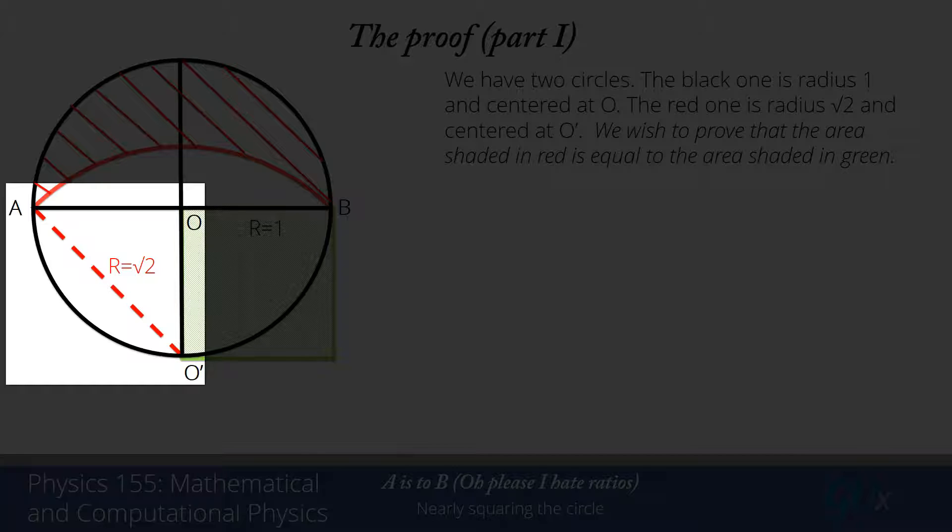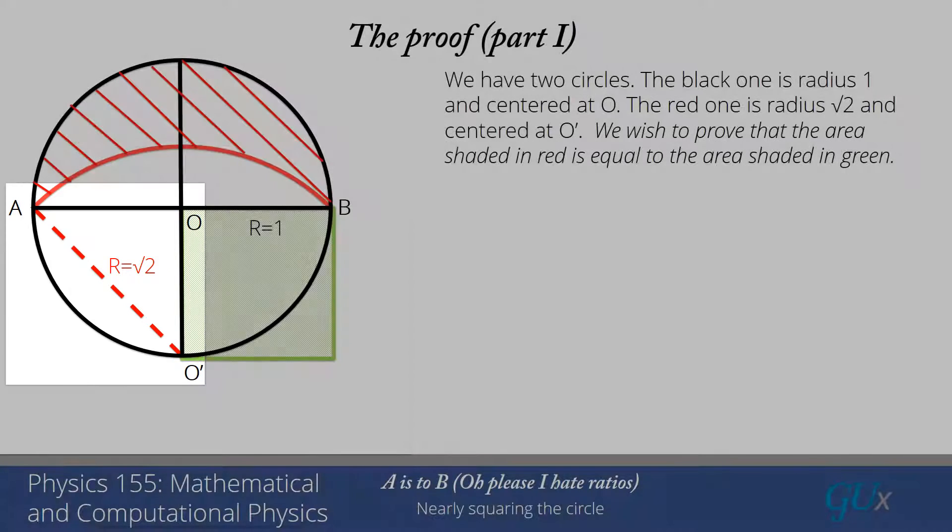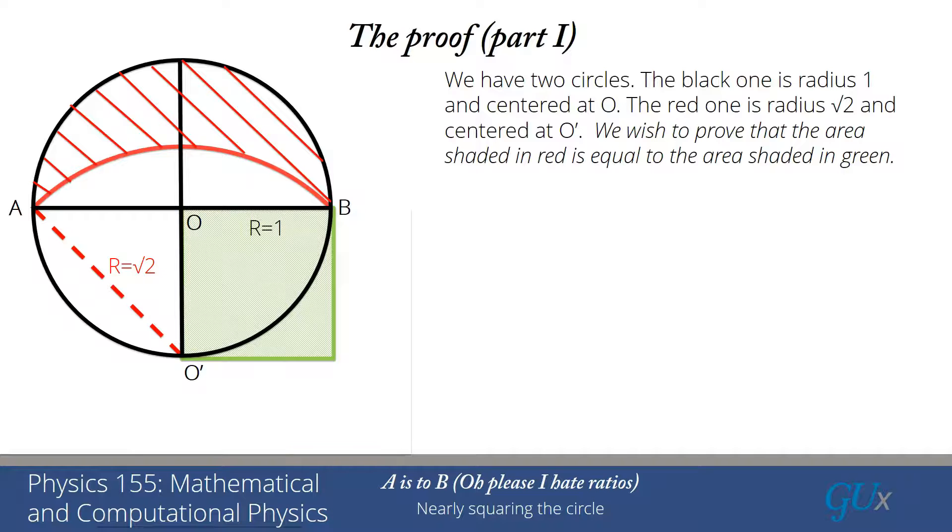And so by the Pythagorean theorem, the length of the red dashed line is the square root of 1 plus 1, which is just the square root of 2. What we want to do is we want to prove that the red hatched area is equal to the green hatched area.